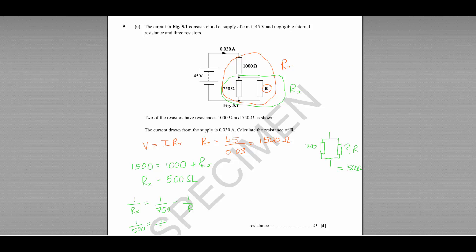So 1 over 500 equals 1 over 750 plus 1 over R. Rearranging, 1 over R equals 1/500 minus 1/750, which gives 0.000667. Taking the reciprocal of that value gives us R equals 1500 ohms.